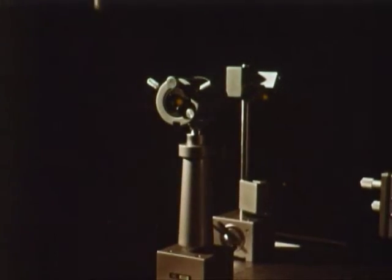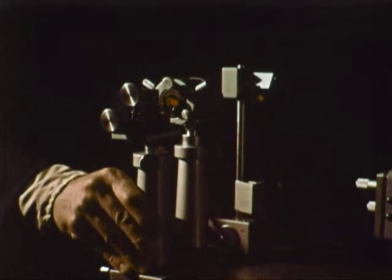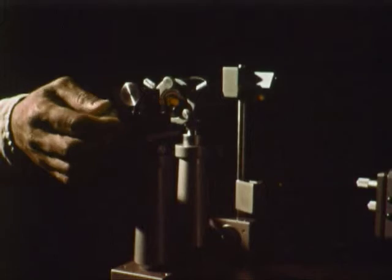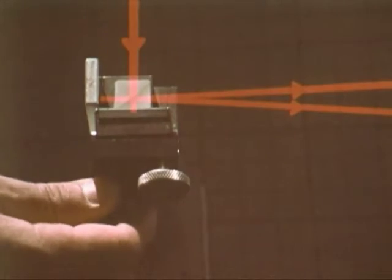We will use a laser to check for interference by passing its light through this optical device, which splits the beam in two. The interference should appear as bands of light and dark.